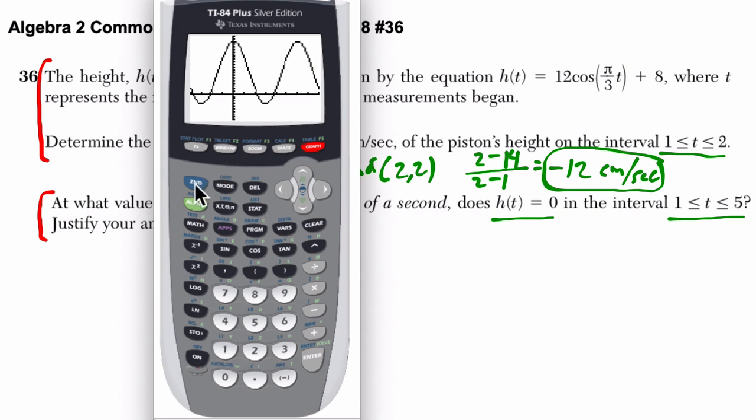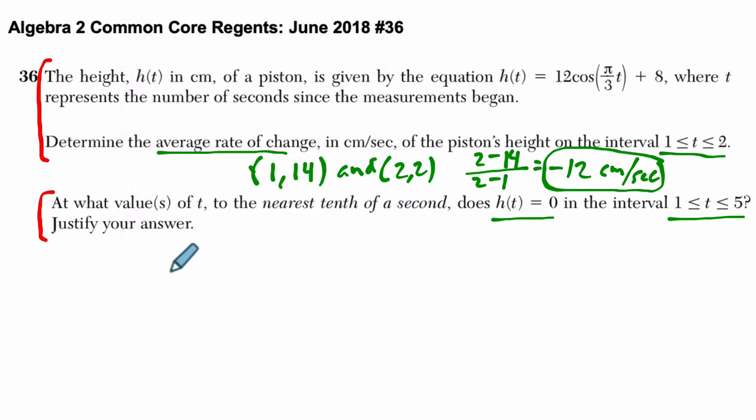What I would then do is hit second, trace, and choice 2 is specifically designed to measure when the height is 0. If I hit enter, here's my cursor. I hit a point to the left of my 0, enter. I go to the right, I know this is past the 0. Then I hit enter a third time for guess. Here we're saying one of the zeros is at 2.1968, which to the nearest tenth of a second is about 2.2 seconds.